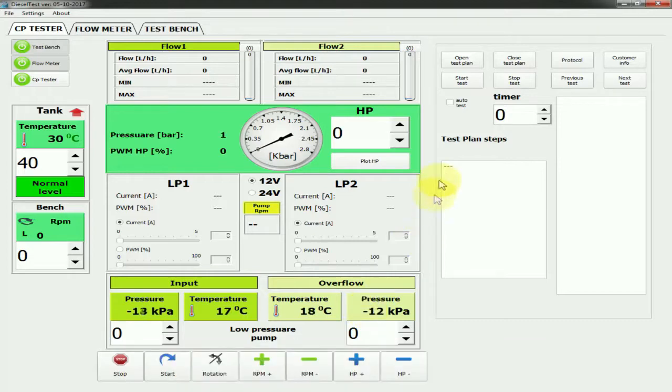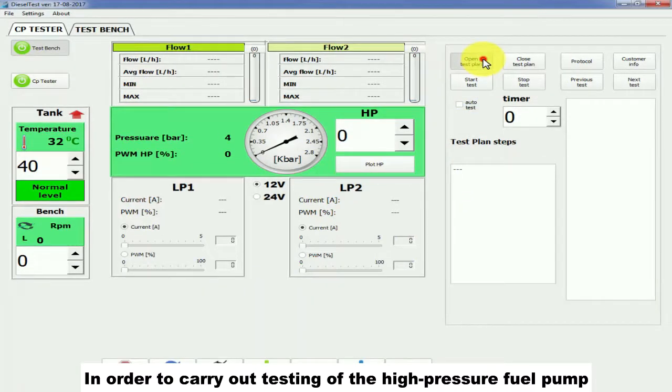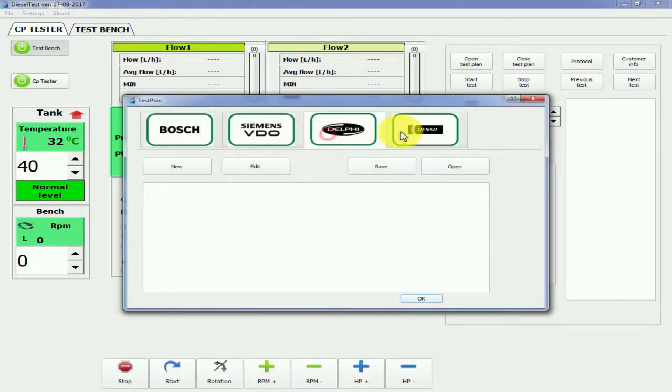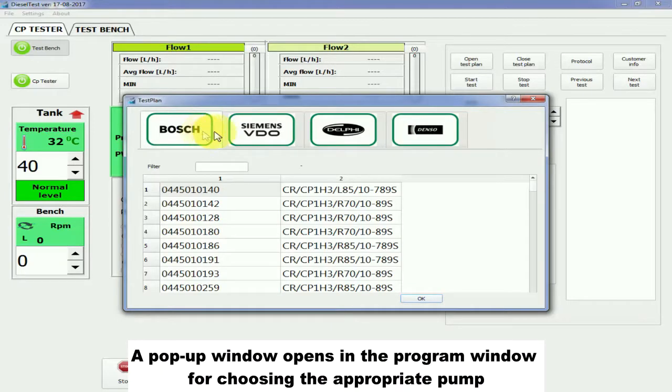In order to carry out testing of the high-pressure fuel pump, press the button Open Test Plan. A pop-up window opens in the program window for choosing the appropriate pump.